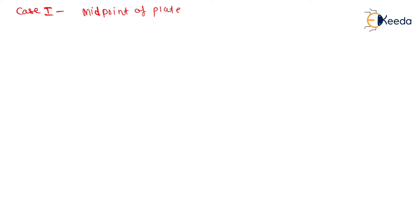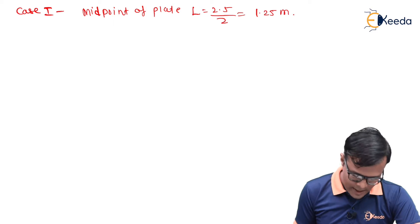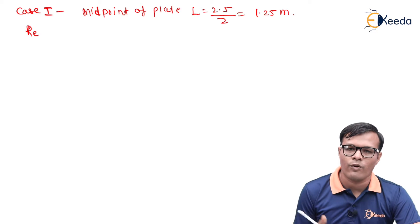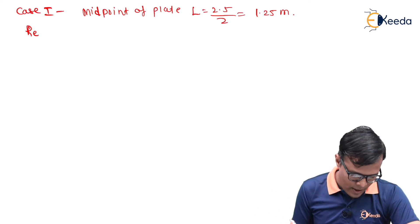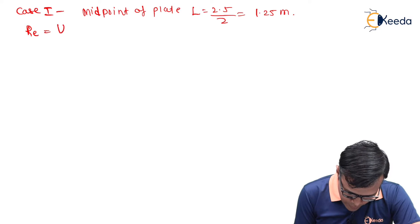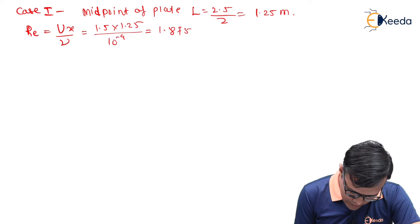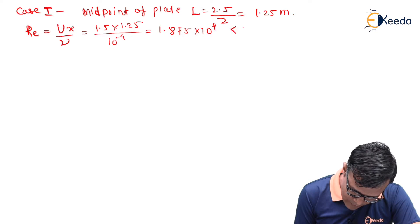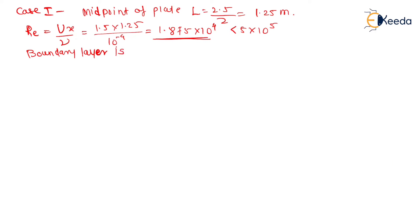Case 1: at the midpoint of the plate, length x = 2.5 / 2 = 1.25 meter. First we calculate the Reynolds number to determine whether the flow is laminar or turbulent. Reynolds number = U × x / nu = 1.5 × 1.25 / 10⁻⁴ = 1.875 × 10⁴, which is less than 5 × 10⁵. So we conclude that the boundary layer is laminar.